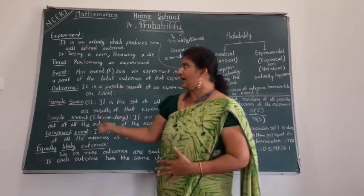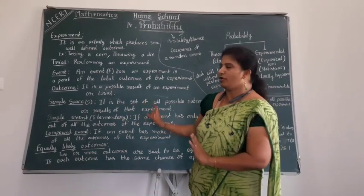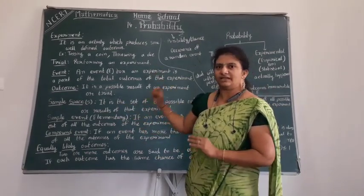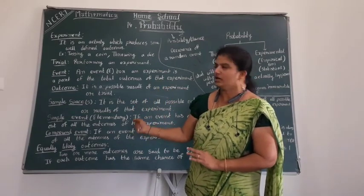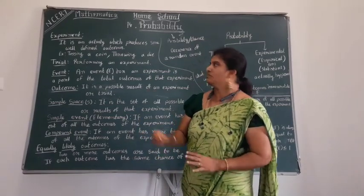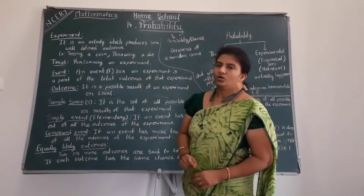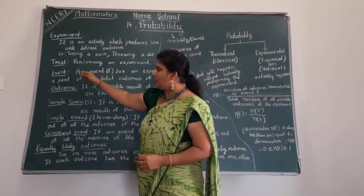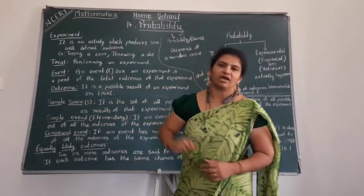In 9th standard we have already studied some concepts of probability, so let's recollect and then start the actual concepts. These concepts we are going to use in the present probability also. We have come across some keywords here: experiment, trial, event, outcome, and sample space.